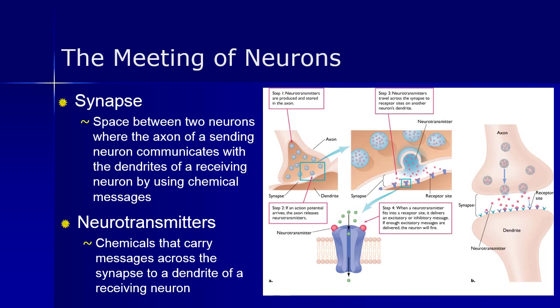For example, acetylcholine is vital to memory, muscle contractions, and learning, and low levels of this neurotransmitter have been linked to Alzheimer's disease.